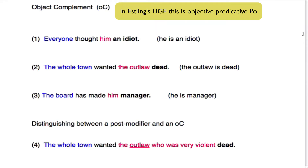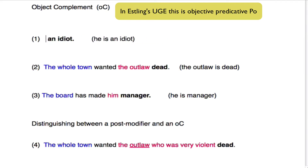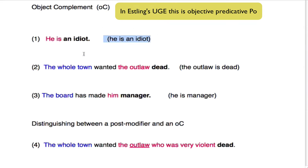It doesn't post-modify the word he. Instead, it tells us how he has changed because of the thinking. Now, if these words had not been here — everyone thought — then this would have been: he is an idiot. And in that case, an idiot would have been the subject compliment, and he would have been the subject. This is why I've written this here: he is an idiot.